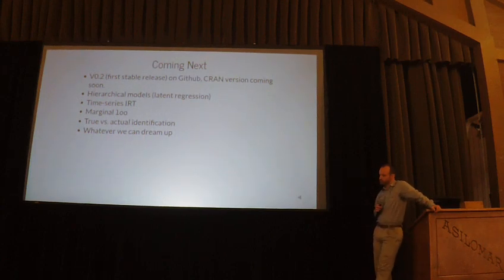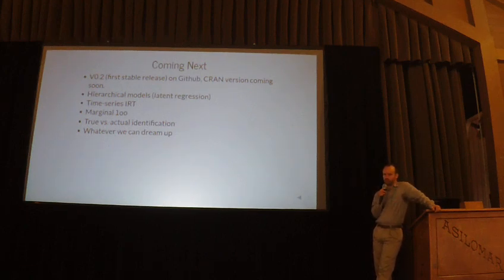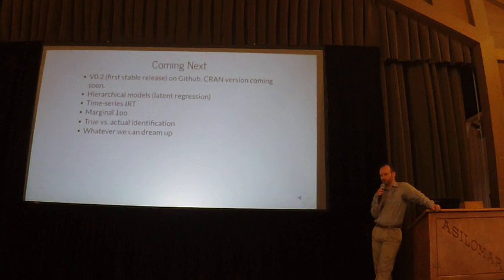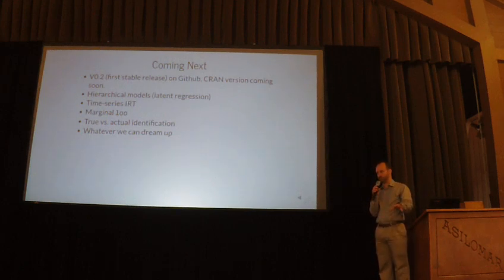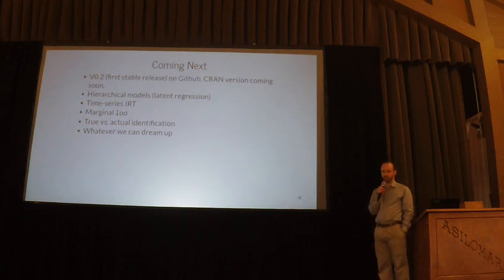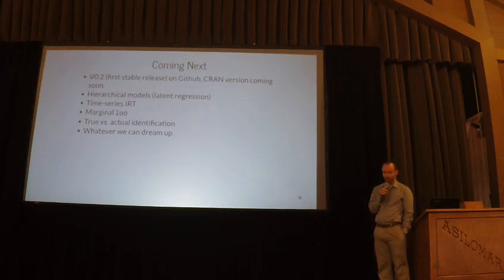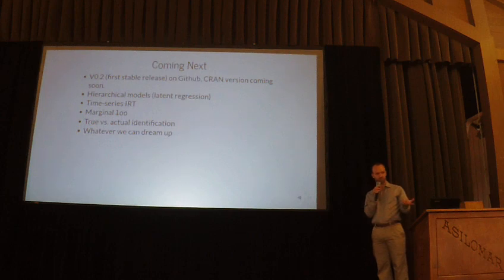Do you plan to or currently support multi-dimensional ideal points? That's one thing I have not added in yet, and it's another thing that's really easy to do in Stan. I just have to write a new code file and add that as an option. You want to keep the multi-dimensional things separate because it's really going to slow things down — you have to have a giant matrix for all the different dimensions. But that's another thing I'm going to do soon. It'll be a multi-dimensional compensatory IRT model, if you're familiar with those.